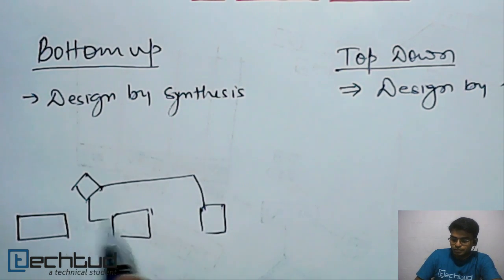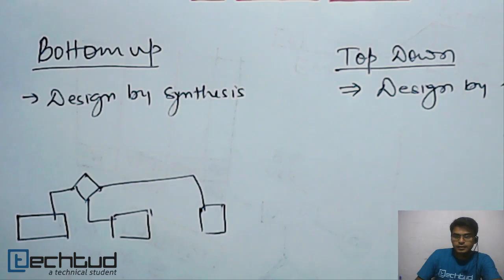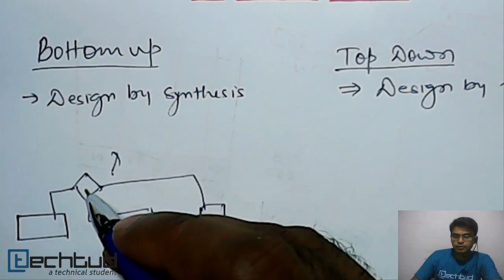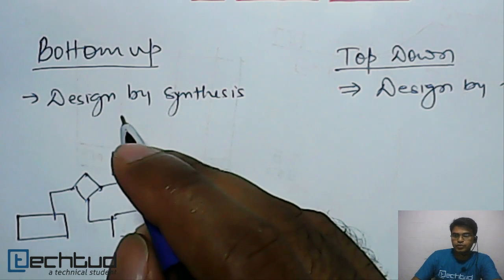So maybe a relationship here something like this, and then we will move up. So again, if we need something from this relationship, we will form another relationship and so on.